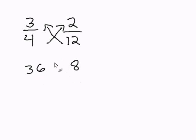Now since it's greater than, I'm going to write the greater than symbol. And this indicates to me that 3 fourths is greater than 2 over 12.